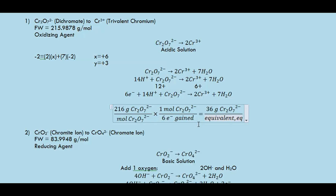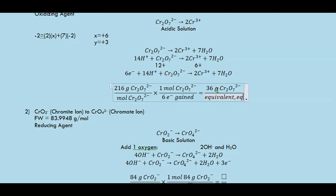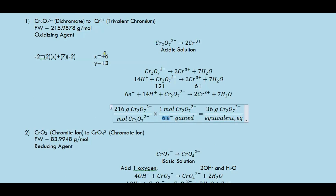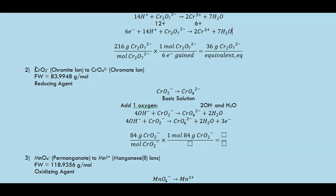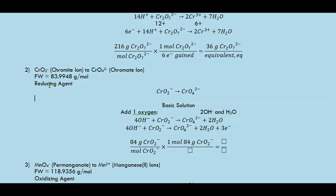Next, suppose we have the same chromium but in a different form. Now we look at chromite ion changing to chromate ion. This formula weight is the formula weight of chromite. This reaction occurs in a basic solution. Is chromite an oxidizing or reducing agent? Let's verify.